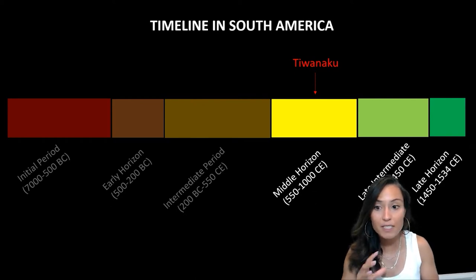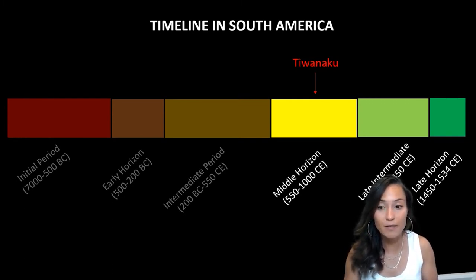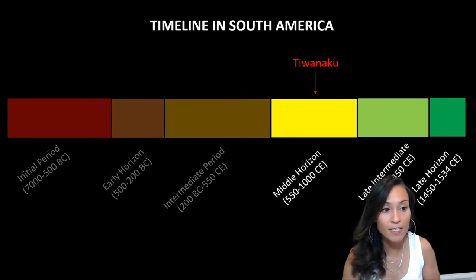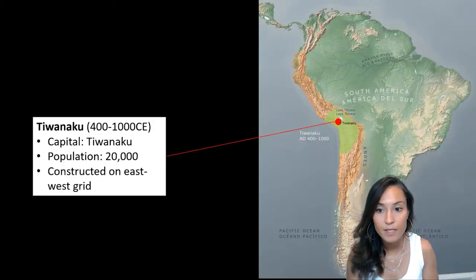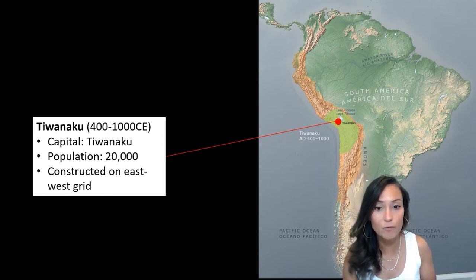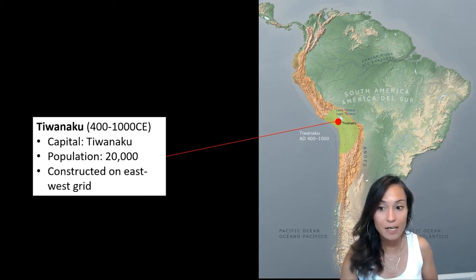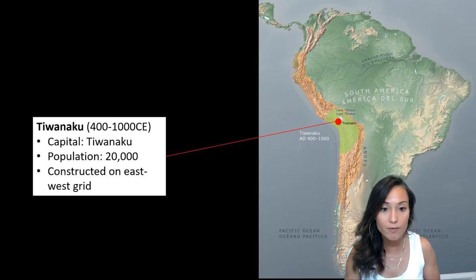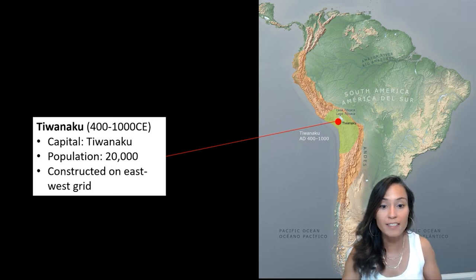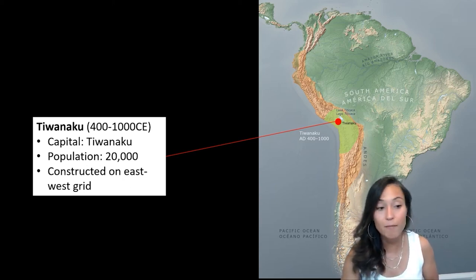I want to start with the Middle Horizon period, which stretches from roughly 550 to 1000 CE. A key archaeological site and civilization during this period is called Tiwanaku. Tiwanaku is the highest city in the ancient world, sitting at 12,600 feet. At the height of its occupation, Tiwanaku had an estimated population of roughly 20,000 people, occupying the city between 400 and 1000 CE. Architecture, sculpture, and roads all had a significant influence on later Inca civilization, and we find the first archaeological evidence for them at Tiwanaku.